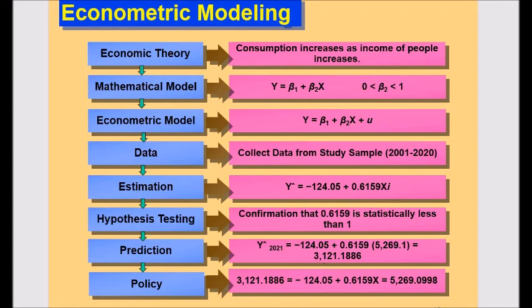You just need to put $3,121.1886, which is your consumption expenditure for 2021. You just need to put this in the equation and you will get $5,269.0998 billion. So, you need this amount of income to meet the consumption expenditure for year 2021.